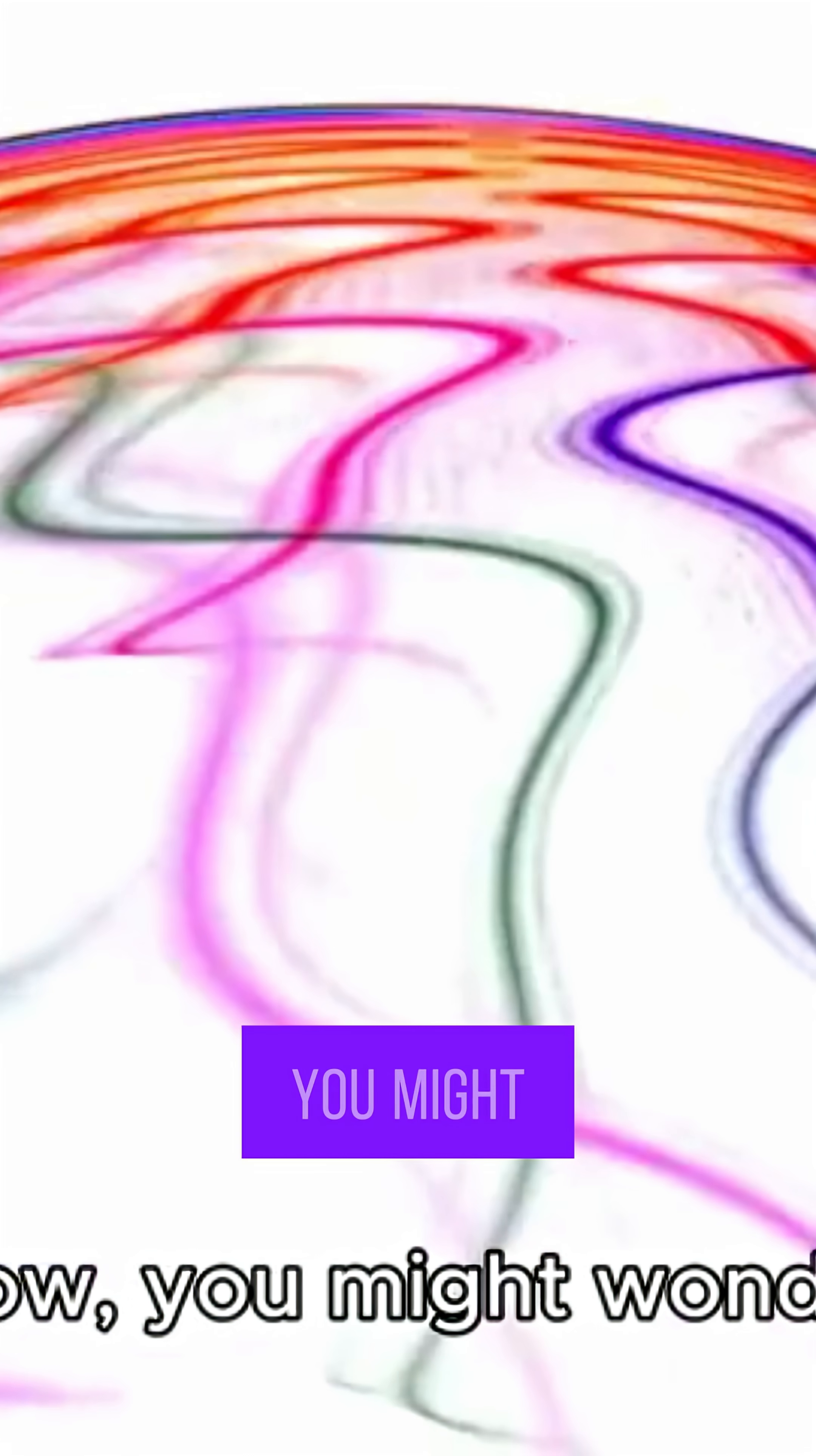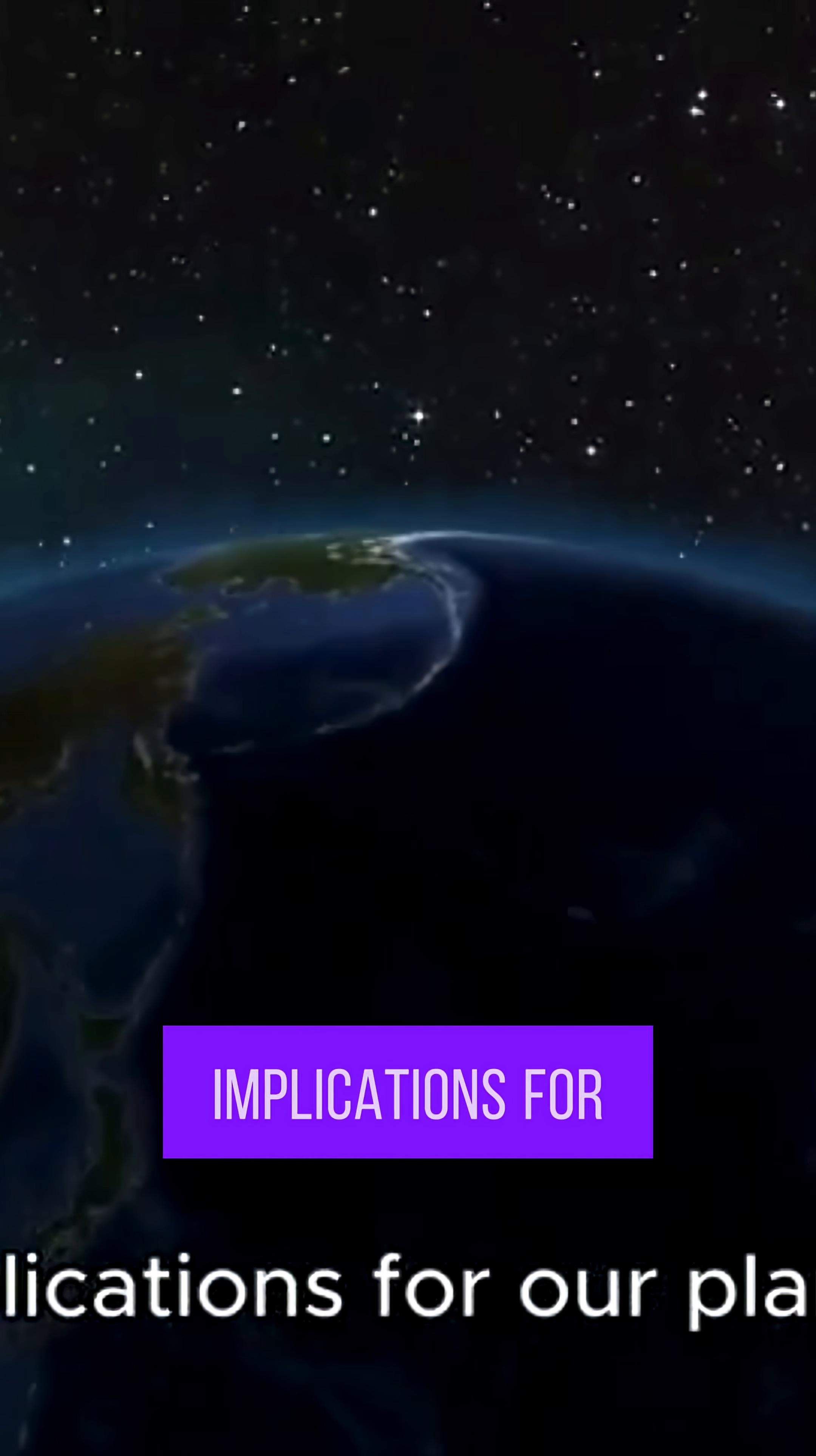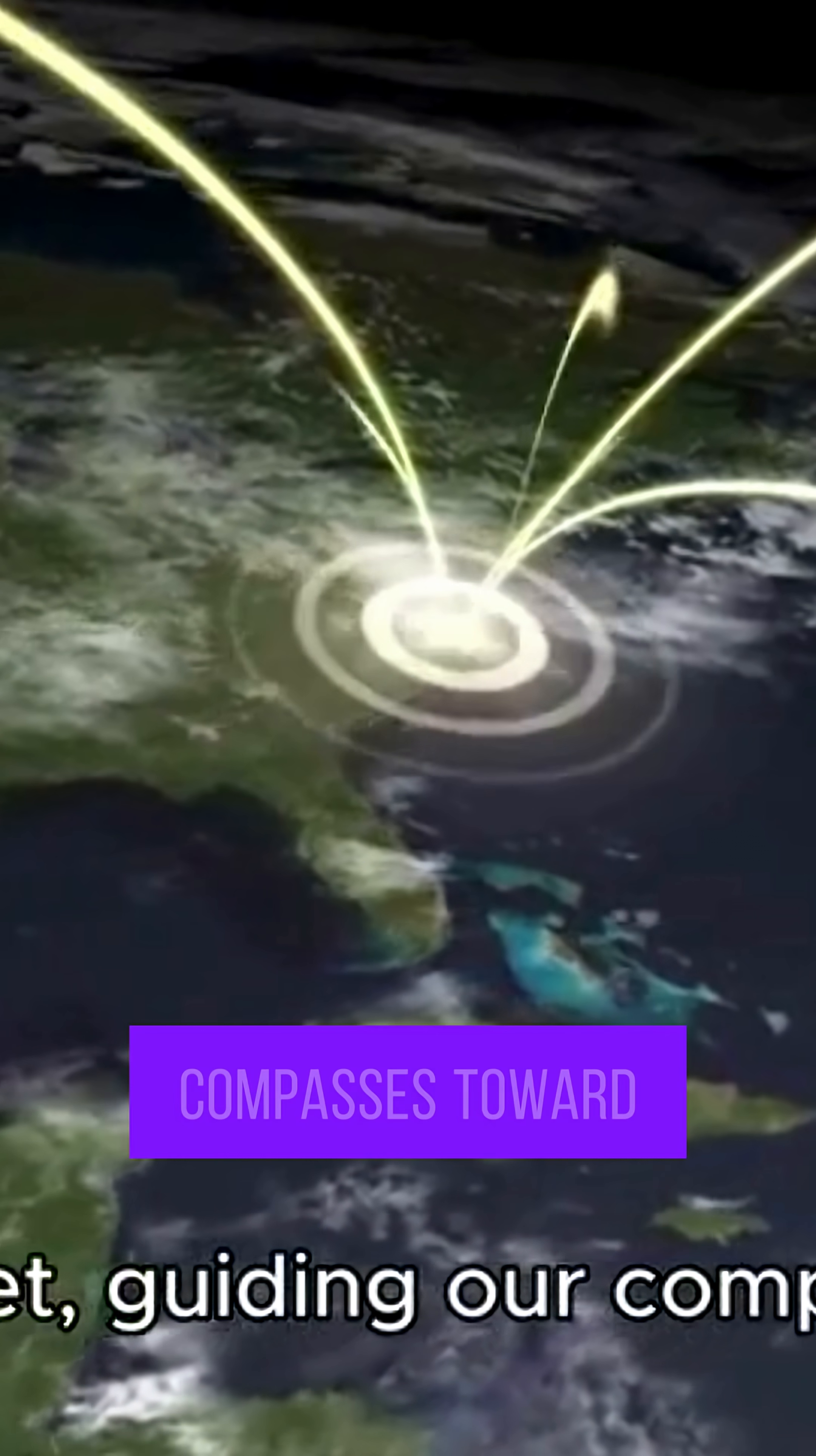Now you might wonder what a magnetic polar flip means for us. Well, it's not just a quirky phenomenon – it could have significant implications for our planet. Currently, Earth's magnetic field acts like a giant bar magnet, guiding our compasses toward the dominant pole.